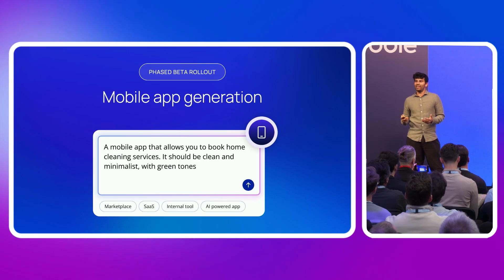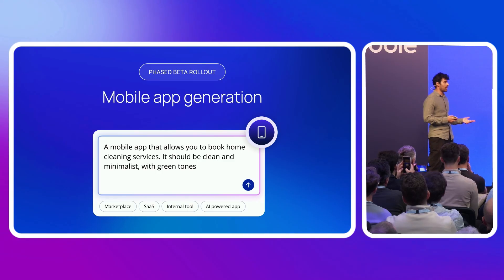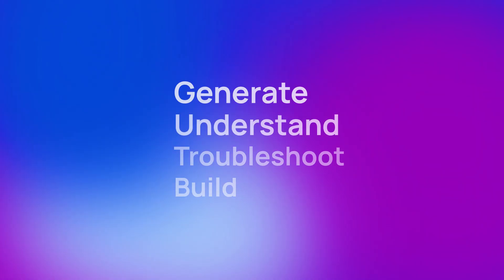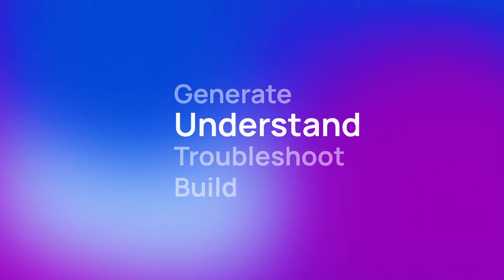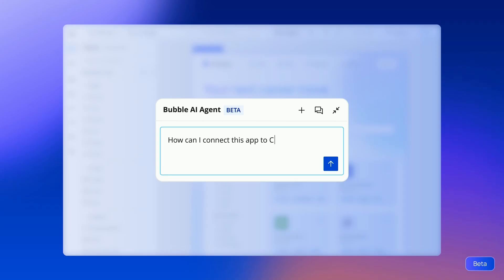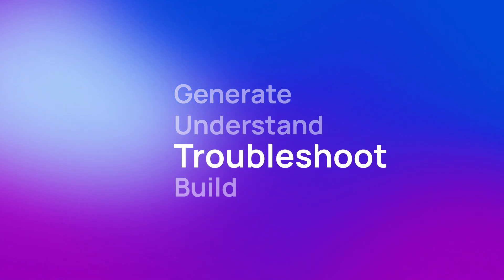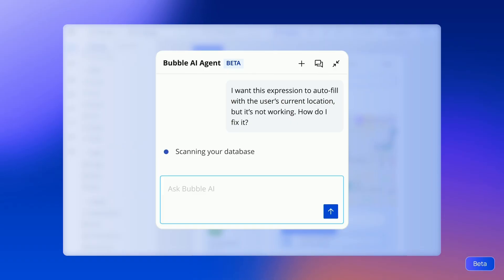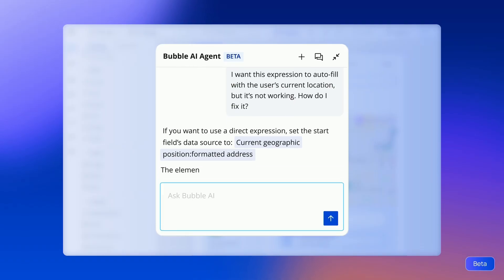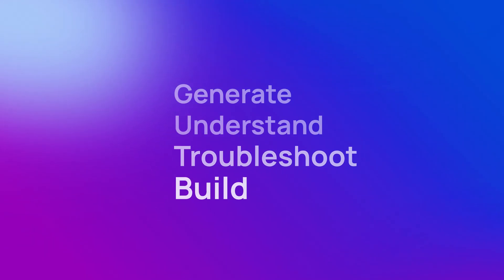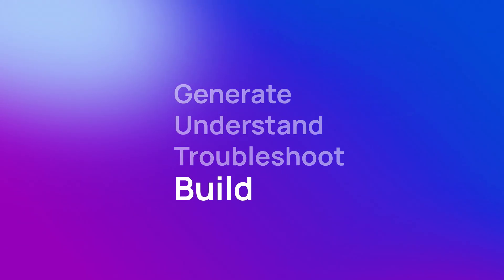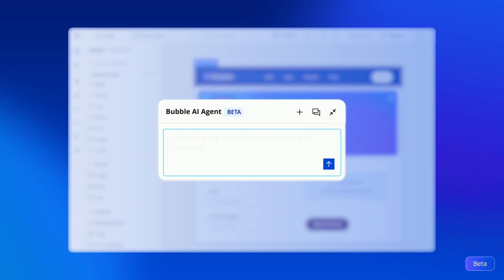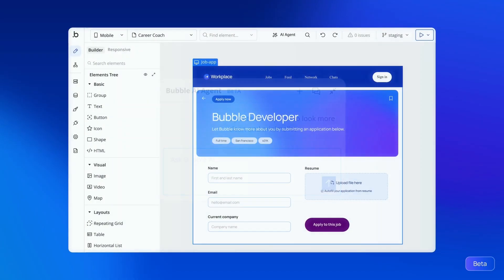We've expanded the AI app generator's capabilities to include native mobile apps. You can prompt, again in any language — for example, how do I connect my app to ChatGPT? You can also troubleshoot a specific expression. Speak to it naturally, it'll respond. The agent will go ahead and update all relevant elements to reflect your guidance.